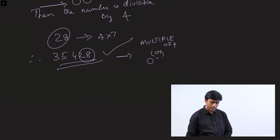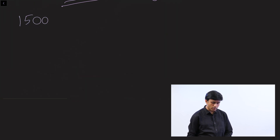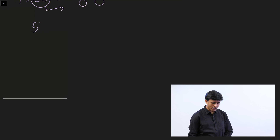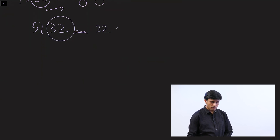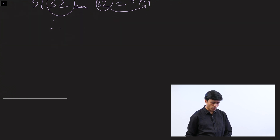Let's take more examples. How about 1,500? Is this number divisible by 4? Yes, it is, because the last two digits are double zero. How about 5,132? The last two digits are 32, which is 8 into 4, so 32 is a multiple of 4. Therefore 5,132 is divisible by 4.